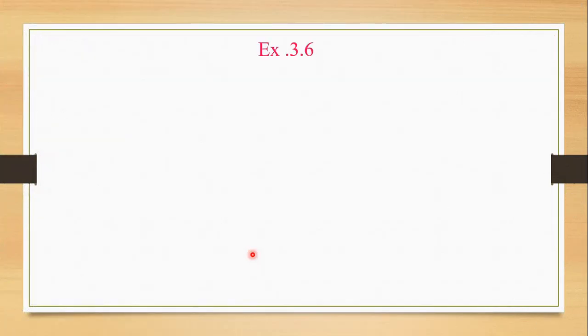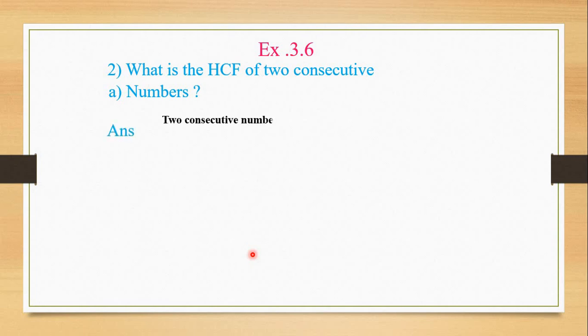Now let's move to Exercise 3.6, question 2. We have to find the HCF of two consecutive numbers. Consecutive means one after the other. You can take any two consecutive numbers. For example: 1 and 2, or 6 and 7, or 14 and 15, or 39 and 40, etc.